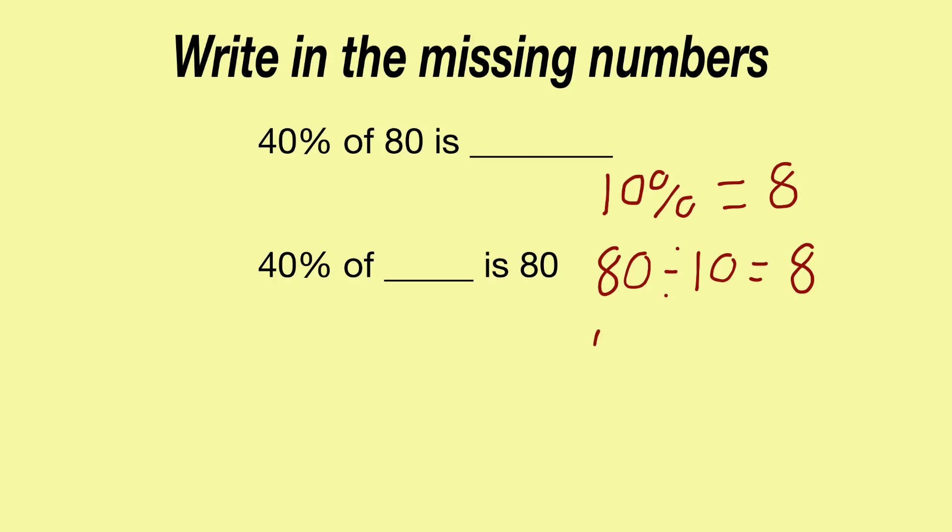But the question says, what's 40% of 80? So you have to ask yourself, what have I done to 10% to make 40%? Well, I've multiplied 10% by 4 to make 40%. So whatever I do to the percentage, I also do to the amount. So I need to multiply 8 by 4. And I'm going to do that mentally. 8 times 4 is 32. There we go, there's my first answer. I'm going to pop that in there, 32.